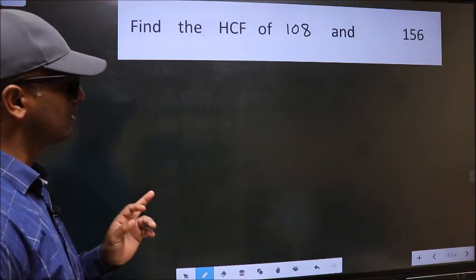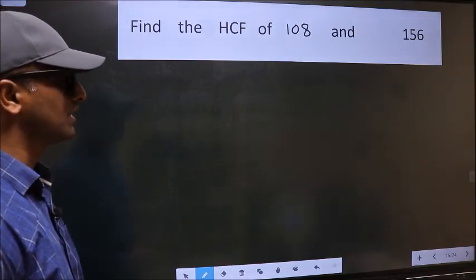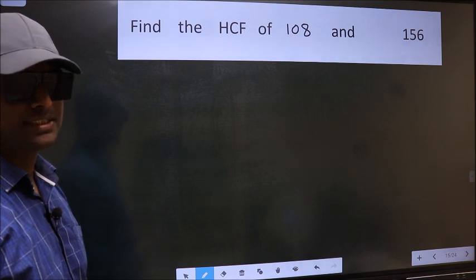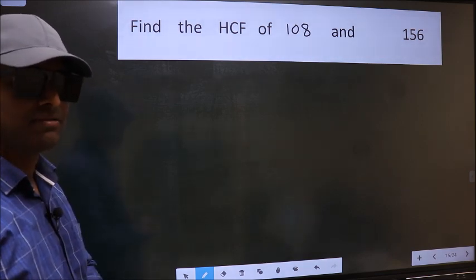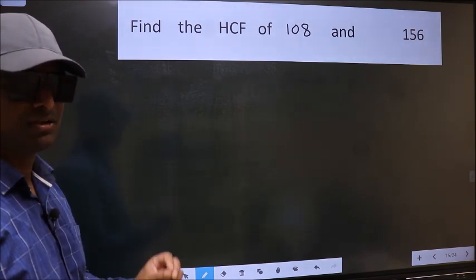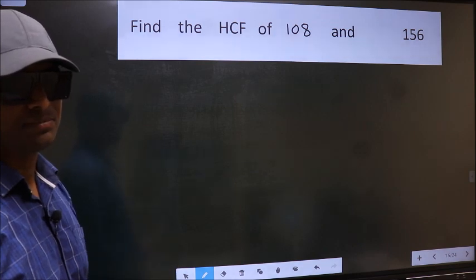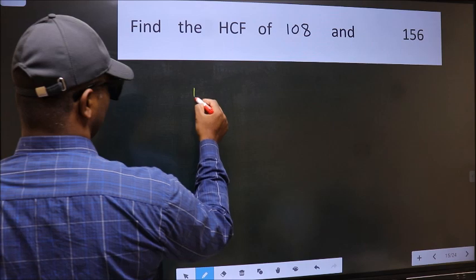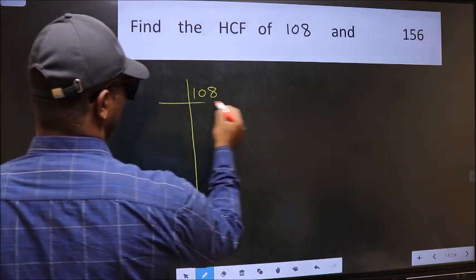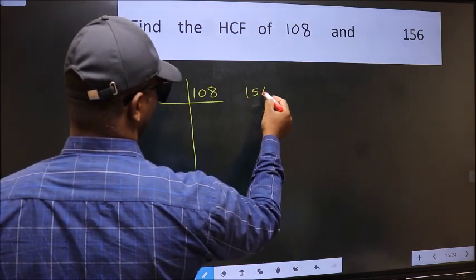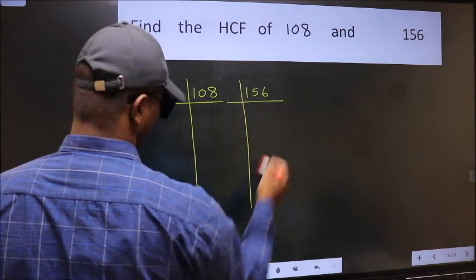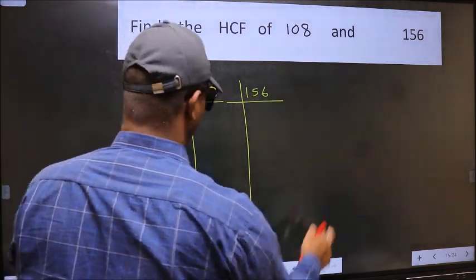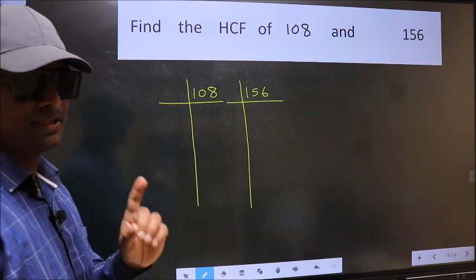Find the HCF of 108 and 156. To find the HCF, we should do the prime factorization of each number separately. So, 108 and 156. This is your step 1.